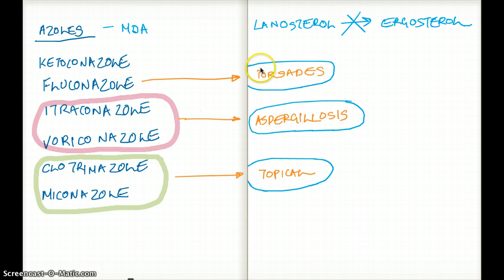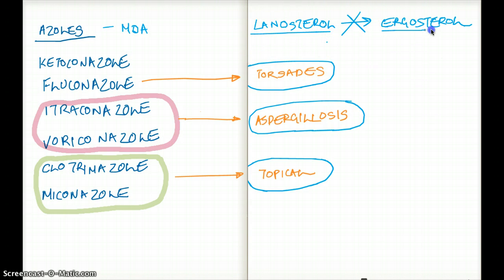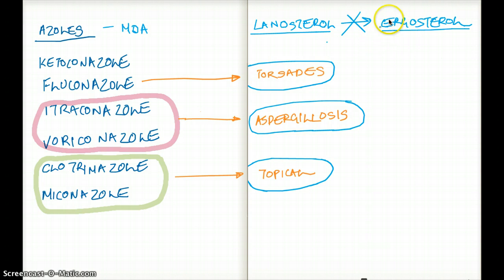Azoles inhibit the conversion of lanosterol to ergosterol. Ergosterol is the most important component of the cell membrane of a fungus. So if fungi don't have ergosterol, there is not going to be any fungus.